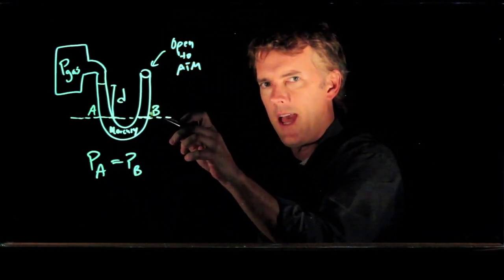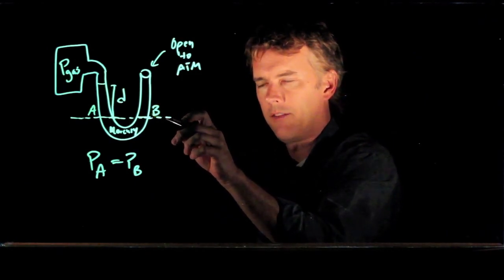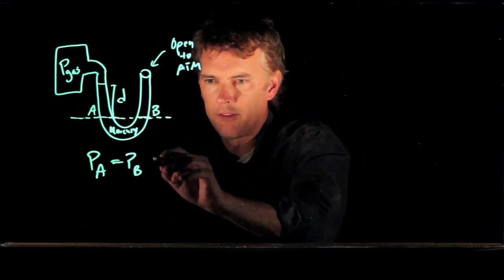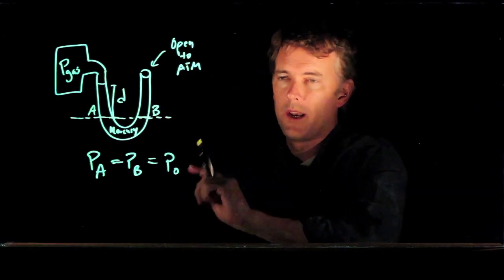But P sub B is at the top of the mercury on this right side. And so there's nothing above it but air that's open to the atmosphere. And so that pressure is P nought, which is one atmosphere.